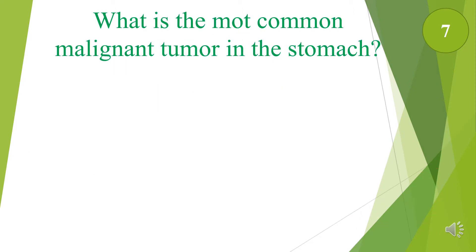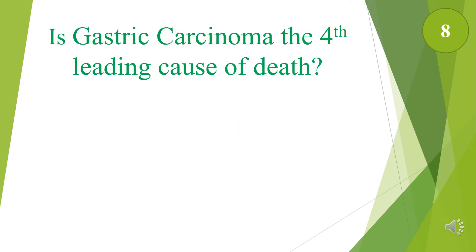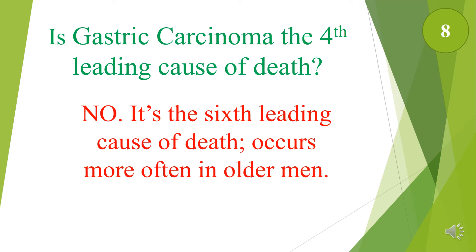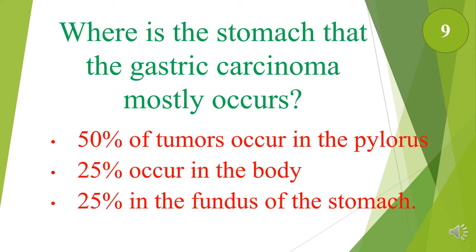Gastric carcinoma is the most common malignant tumor in the stomach. It is about 90 to 95 percent of the malignant tumors of the stomach. Is gastric carcinoma the fourth leading cause of death? No, it is the sixth leading cause of death, and it usually occurs more often in older men. Where in the stomach does gastric carcinoma mostly occur? 50 percent occurs in the pylorus, 25 percent in the body, and 25 percent in the fundus.